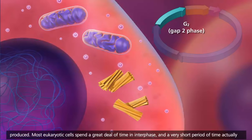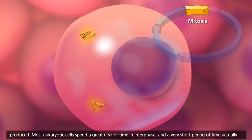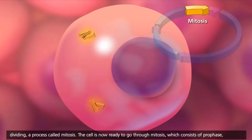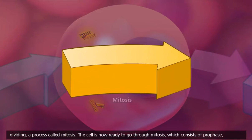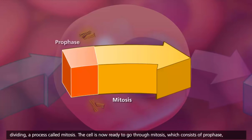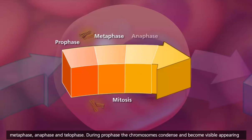Most eukaryotic cells spend a great deal of time in interphase and a very short period of time actually dividing, a process called mitosis. The cell is now ready to go through mitosis, which consists of prophase, metaphase, anaphase, and telophase.